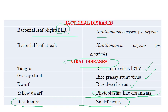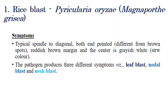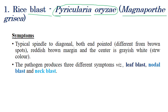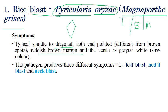The first disease to discuss in detail is Rice Blast, a very important disease caused by Pyricularia oryzae, now called Magnaporthe grisea, which is the teleomorphic or sexual stage. The general symptoms are spindle to diamond-shaped spots with both ends pointed, showing a grayish-white center with dark brown or reddish margins. These are the characteristic symptoms of rice blast.